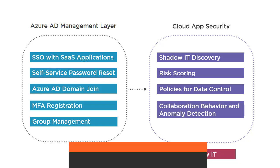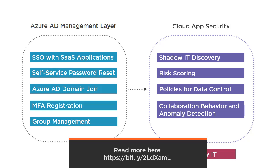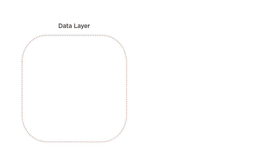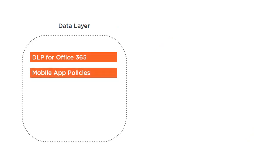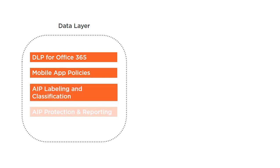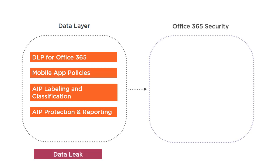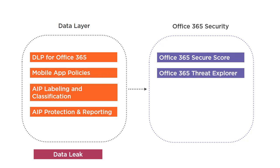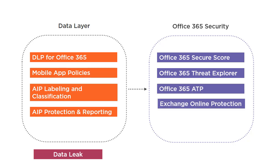Microsoft CAS, or Cloud App Security, is your application layer security, and there is a lot to say about CAS that I urge you to consider when planning your security. At the data layer, we have DLP for Office 365, Mobile App Policies with Intune, and Azure Information Protection for labeling, classifying, and protecting documents and files — so that even if a document gets leaked, it is already protected and encrypted with Azure Information Protection. I also urge you to look at Office 365 Secure Score, which will help you tune the configuration of your Office 365 deployment to enhance your security score. Office 365 Threat Explorer is also worth looking at; it clusters attacks into campaigns and gives you as a security admin the ability to take action right from within the Threat Explorer console.